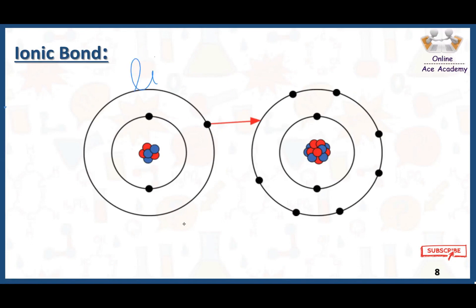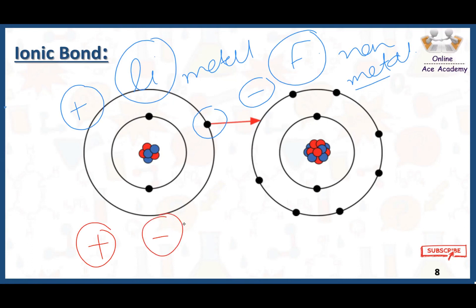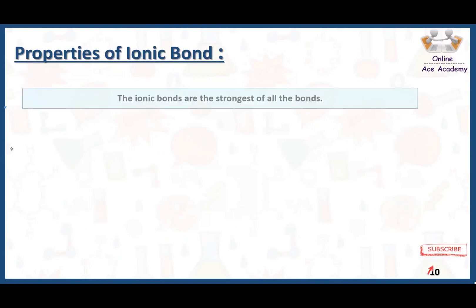Another example is lithium and fluorine. Lithium is a metal and fluorine is a non-metal. Lithium loses its outermost electron, leaving it with two electrons and attaining stability. Fluorine has seven electrons in the outermost shell; after gaining one electron it has eight, attaining stability. Lithium gets a positive charge and fluorine gets a negative charge. They attract each other, release energy, and form an ionic bond — the compound lithium fluoride (LiF) is an ionic compound.